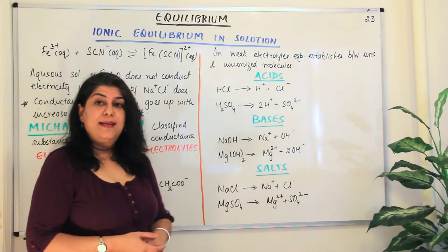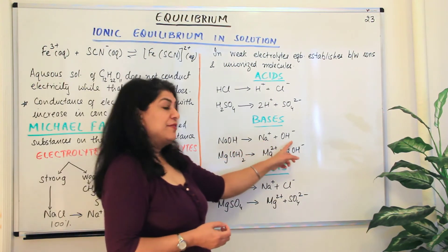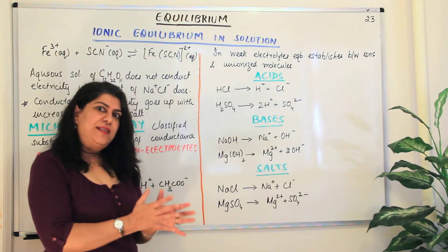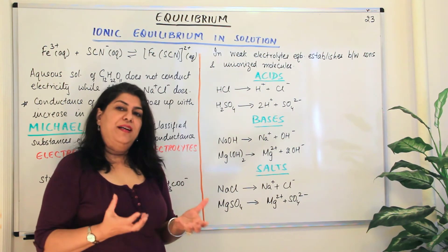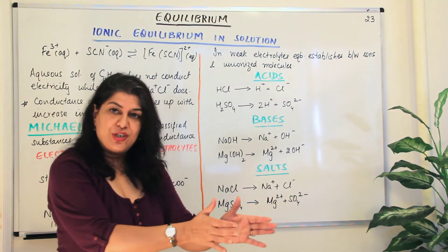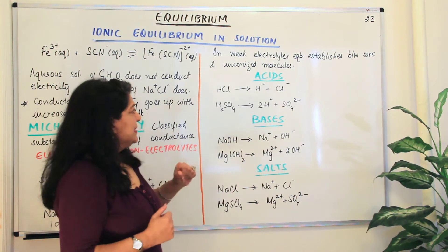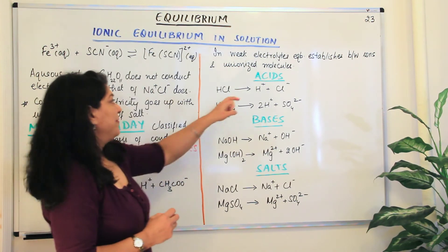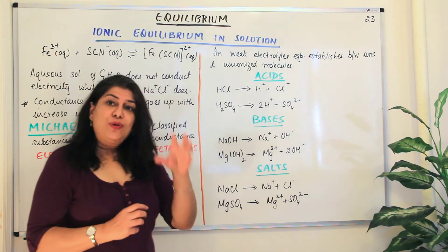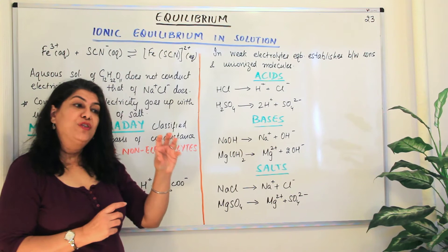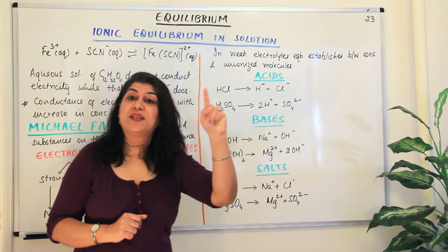A base is something that dissociates in water and gives you a hydroxyl ion, OH⁻. If you put an ionic compound in water and it gives rise to OH⁻, that ionic compound is going to act as a base. So acids are those ionic compounds that have H⁺ and bases are those compounds which have OH⁻. The negative part of an ionic compound is responsible for its basic character, and the positive part of an acid is responsible for its acidic character.